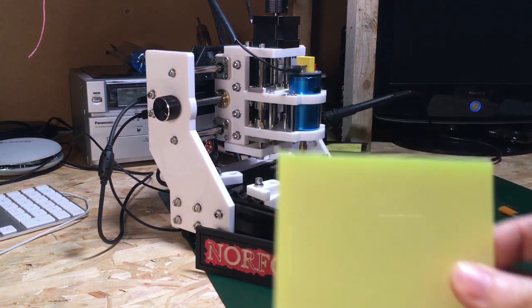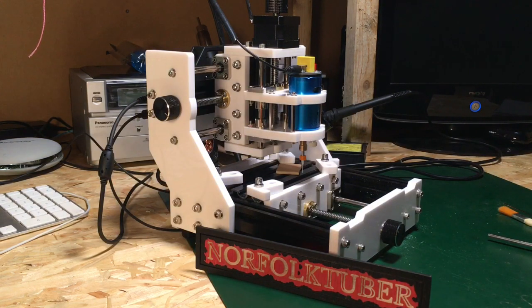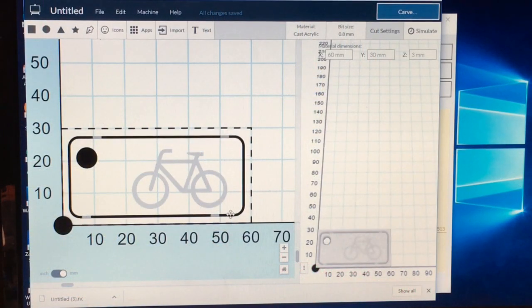So I'll show you the design which I've made on the computer. Right, so here's the keychain that I've designed. Here's a little bicycle icon which I'm going to use, which is in the actual icons built into Easel. There's a lot of different icons that you can use with different designs. I'm going to use this bicycle one because this is going to be for my bicycle lock keys.